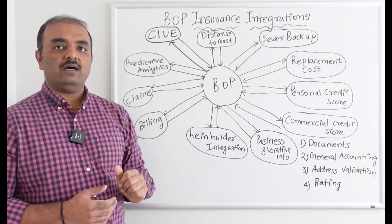Lien holder integration — similar to personal auto or homeowners — addresses the fact that businesses often carry loans. Every time an insurance policy is issued, the lending bank is added so that they are notified in the event of a claim or payment. This lien holder integration ensures those notifications are sent through the system.